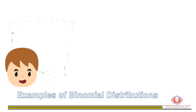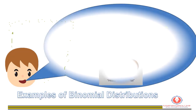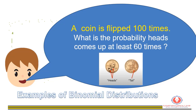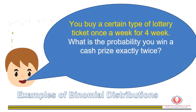Here is an example: a coin is flipped 100 times — what is the probability heads comes out at least 60 times? Another example: you buy a lottery ticket once a week for four weeks — what is the probability you win a cash prize exactly twice? These are both binomial distribution scenarios. A random variable is binomial if the following four conditions are met.